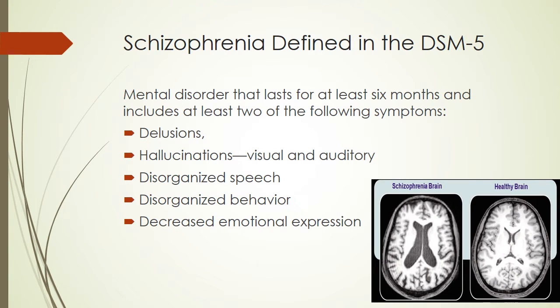Defined in the DSM, Schizophrenia is a mental disorder that lasts for at least six months and includes at least two of the following symptoms.